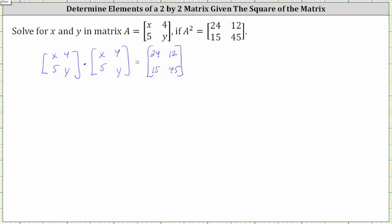And now from here, the element of 24 in the product is in row one, column one. To obtain this element we would have to multiply row one in the first matrix by column one in the second matrix.